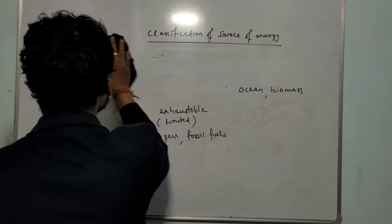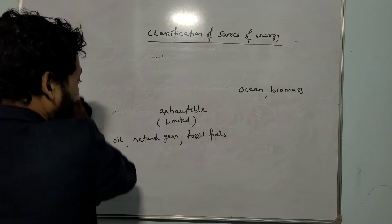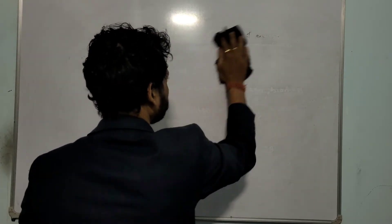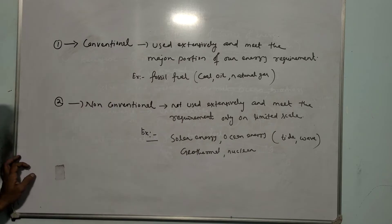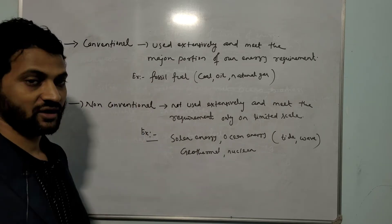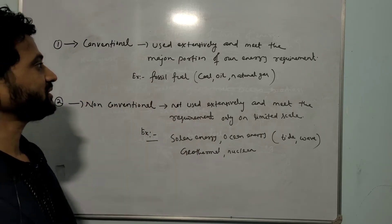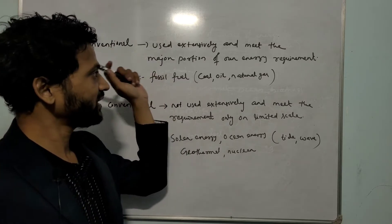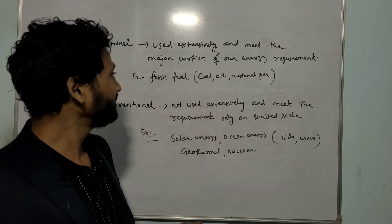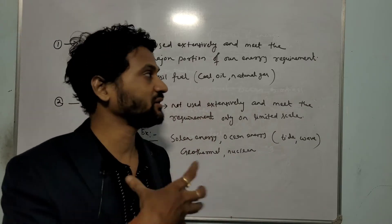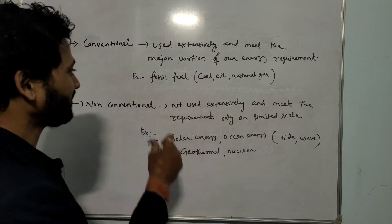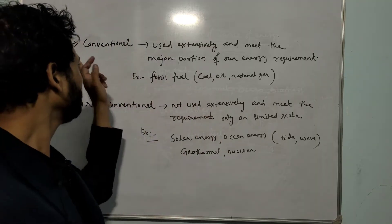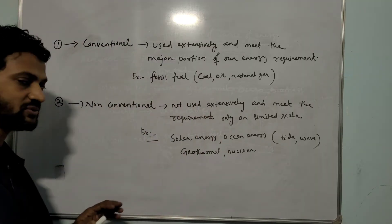Next is conventional source of energy and non-conventional source of energy. Conventional source of energy is that kind of energy which is used extensively and meets the major portion of our energy requirement. Like fossil fuels — coal, oil, natural gases — these come under conventional source of energy.